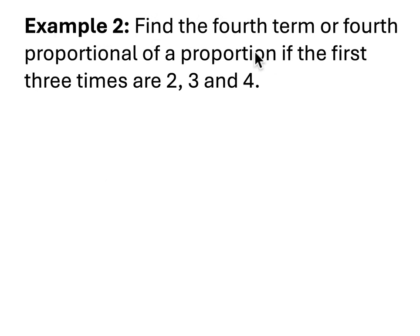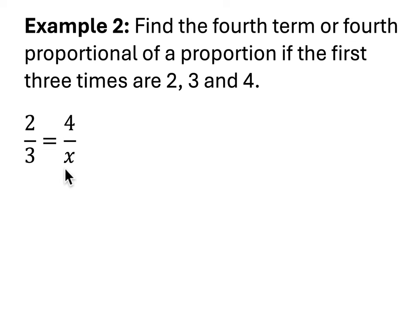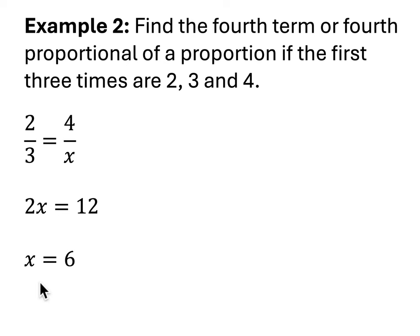Find the fourth term, or fourth proportional, if the first three terms are 2, 3, and 4. The product of the extremes — 2 and x — equals the product of the means — 3 and 4, which is 12. So 2x equals 12, and x equals 6. That's all there is to it.